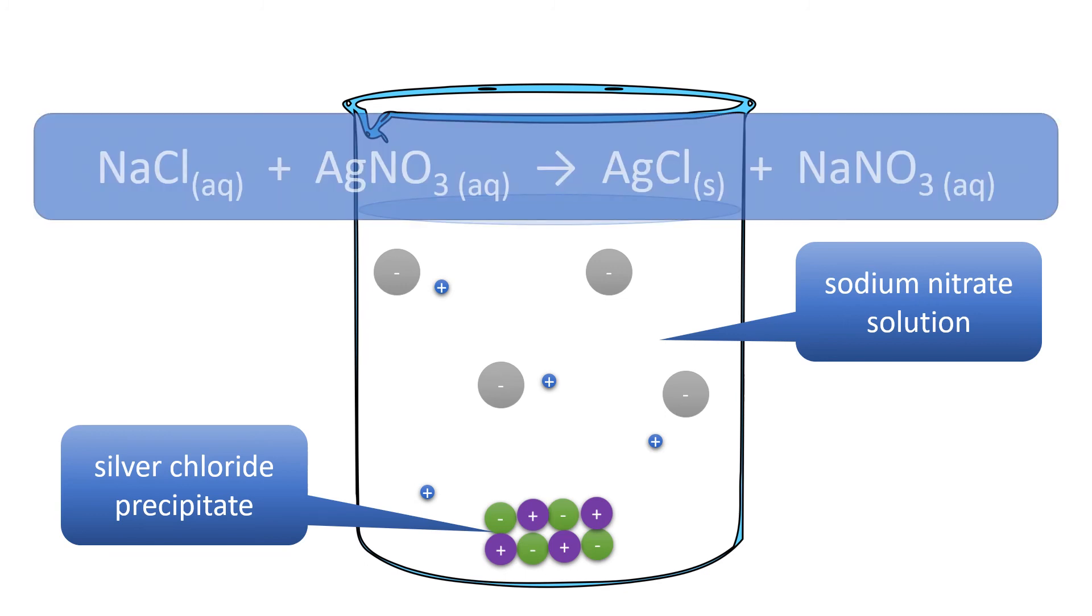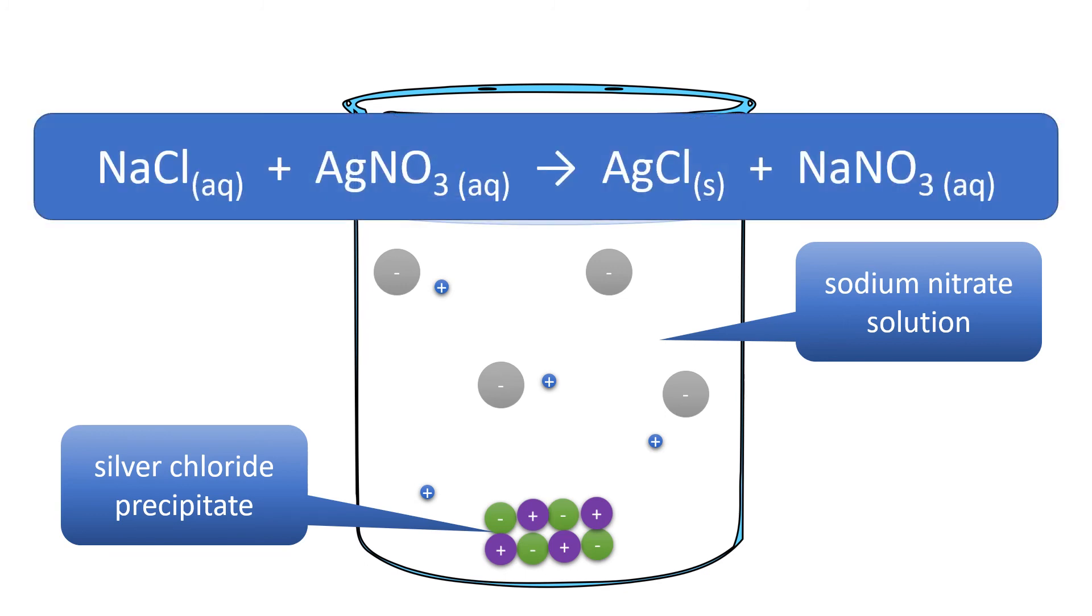Summing it all up then, when a solution of sodium chloride is added to a solution of silver nitrate, we get a solid precipitate of silver chloride and we're left with a solution of sodium nitrate.